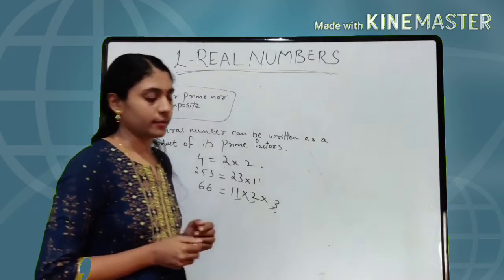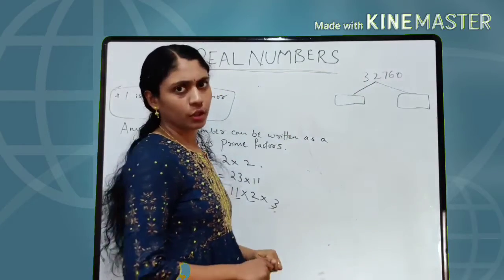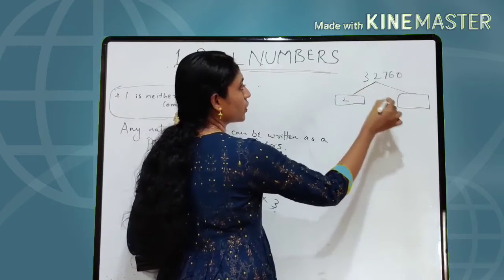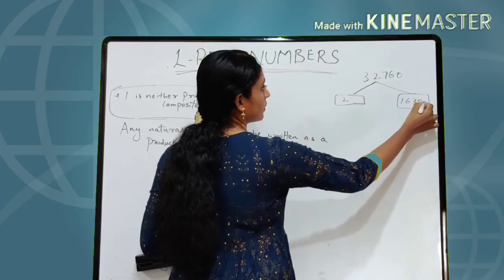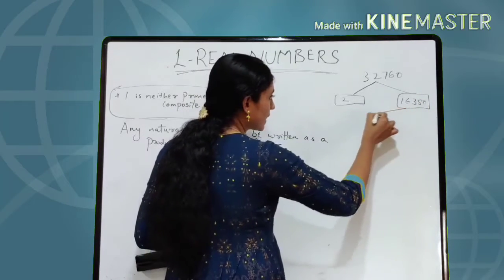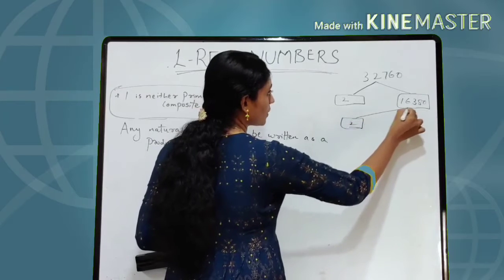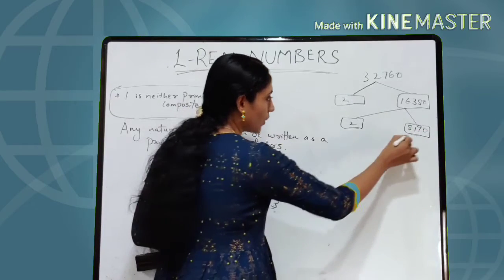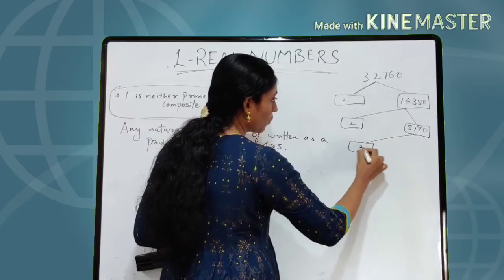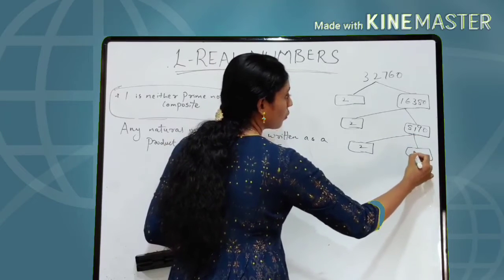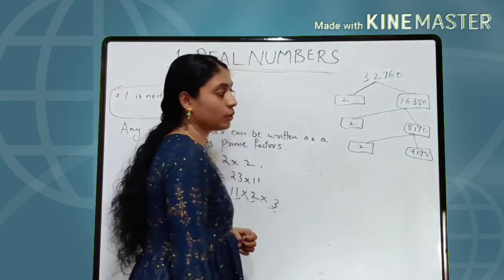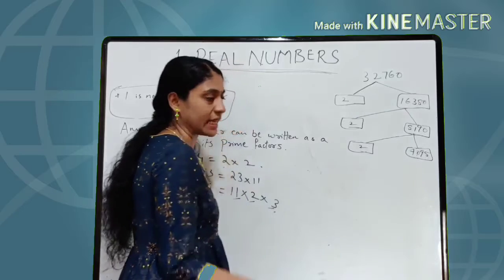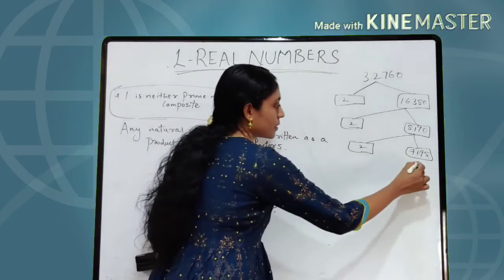Now consider a factor tree for 32760. When 32760 is divided by 2 we get 16380; dividing again by 2 gives 8190; again by 2 gives 4095. Now 4095 is divisible by 3 because 4+0+9+5 = 18, which is a multiple of 3. Dividing 4095 by 3 gives 1365.